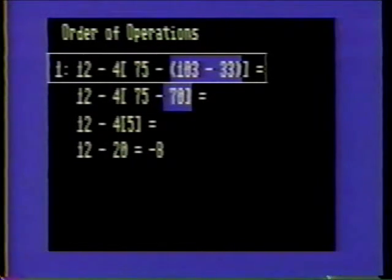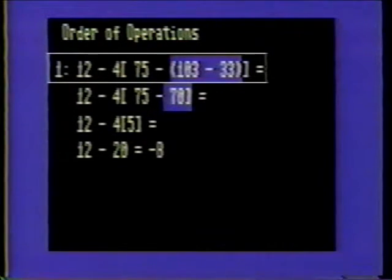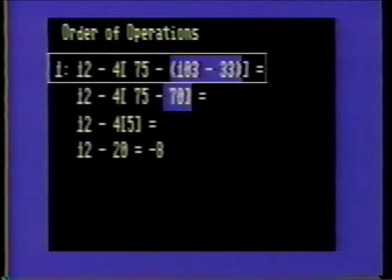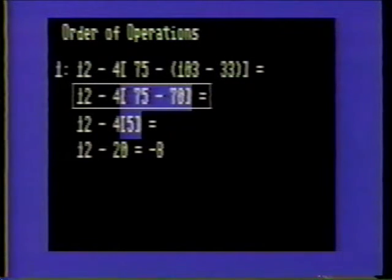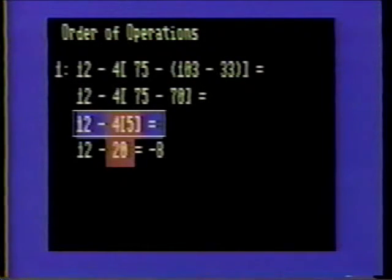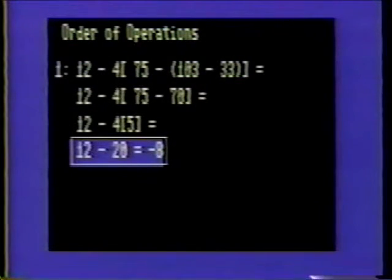Order of Operations, Problem 1. In this set of problems, the order in which a problem is solved is very important — in fact, it is crucial in order to obtain the proper result. Problem 1 contains two sets of grouping symbols. Obtain the solution of the innermost grouping symbol first: 103 minus 33 is 70. Next, solve for the outermost grouping symbol: 75 minus 70 is 5. Next, multiply 4 times 5, which is 20. Finally, carry out the last operation: 12 minus 20, which is negative 8.